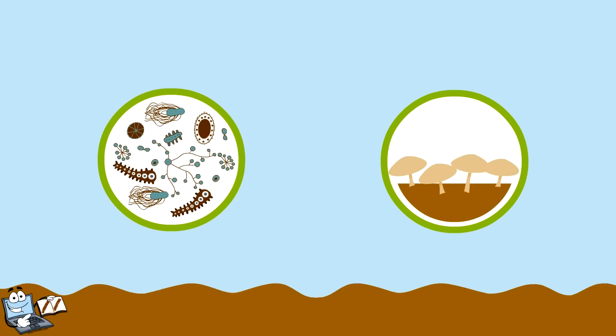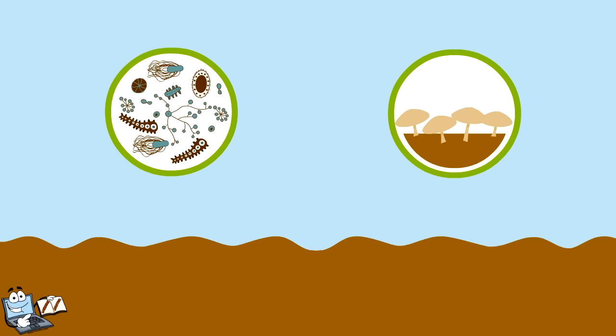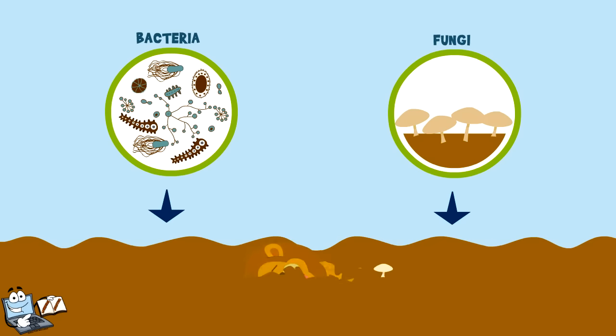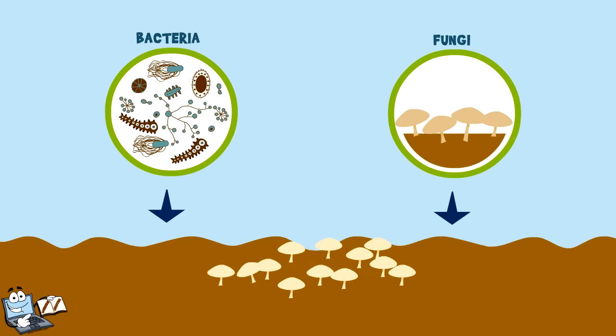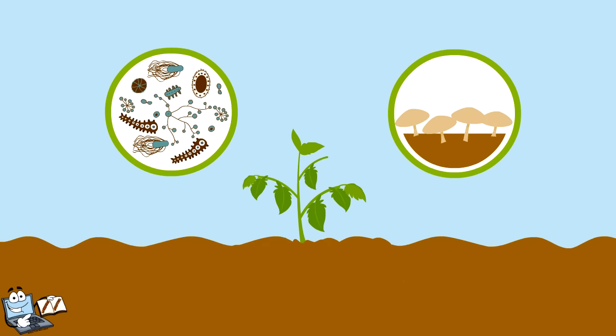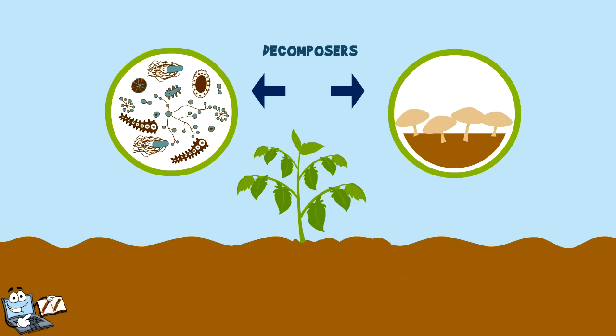There is a not-so-noticeable part of this food chain — bacteria and fungi in soil. When animals die, these bacteria and fungi decompose their dead bodies. They become nutrients, and these nutrients are again used by the plants to make food.